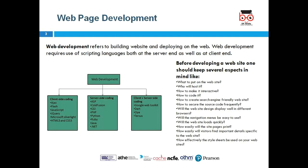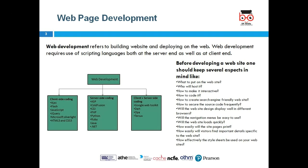Further questions to consider: Will the website display well in different browsers? Will the navigation menu be easy to use? Will the website load quickly? How easily will pages print? How easily will visitors find important details? How effectively will style sheets be used? These questions form a kind of technical architecture checklist.